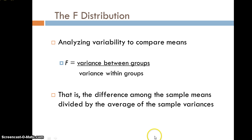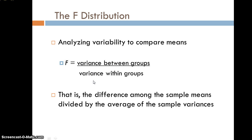You can imagine that if there's more variability between those groups — say, in anxiety scores across three different kinds of treatment — the F-ratio would be very large because the variability between the groups accounts for a lot more of that variance than the variability within the groups. We're looking at the difference among the sample means divided by the average of the sample variances — partitioning that variance — that's why it's called analysis of variance.